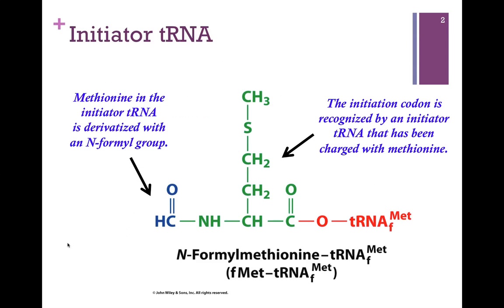The initiator tRNA in prokaryotic systems delivers a modified form of the amino acid methionine. The universal start codon is AUG, and it always specifies methionine — true in both prokaryotic and eukaryotic systems. However, in prokaryotic systems, the first methionine is delivered in a modified form: N-formylmethionine. Methionine is shown in green, attached to the tRNA in red, and it's been modified at the alpha-amino group by adding a formyl group.